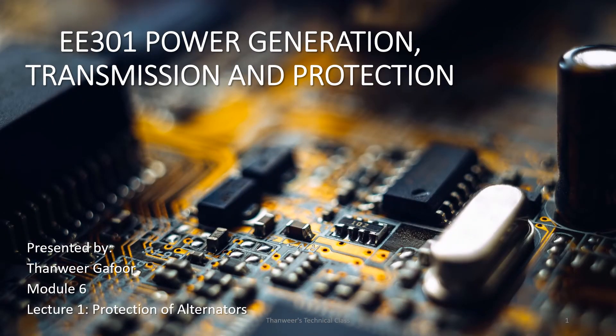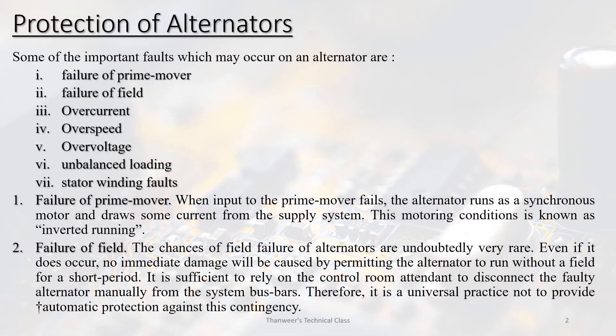Welcome back to EE301 Module 6, the first lecture series on protection of alternators. Some of the important faults which may occur on an alternator are: failure of prime mover, failure of field, over-current, over-speed, over-voltage, unbalanced loading, and stator winding faults.